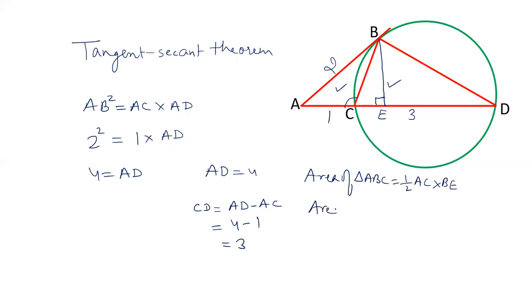Area of triangle BCD equals half CD times BE. To find the ratio, we divide these two. Half cancels out, BE cancels out, so it equals AC upon CD. AC is 1, CD is 3. Therefore, the ratio of areas of triangle ABC and BCD is 1 to 3.